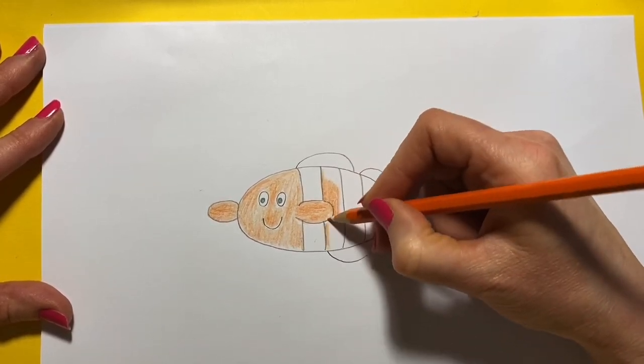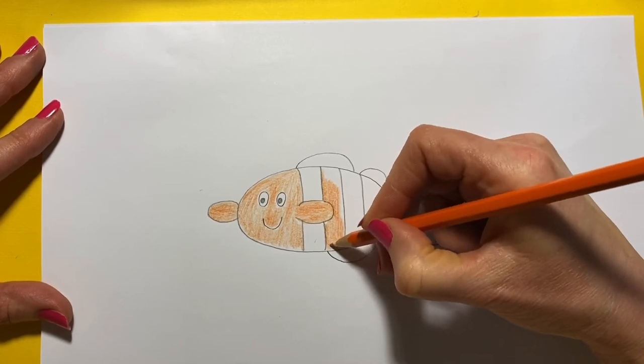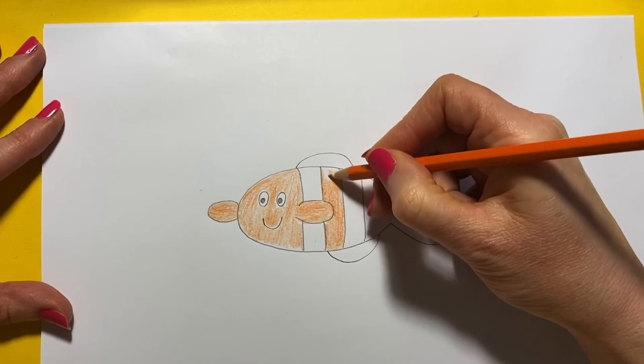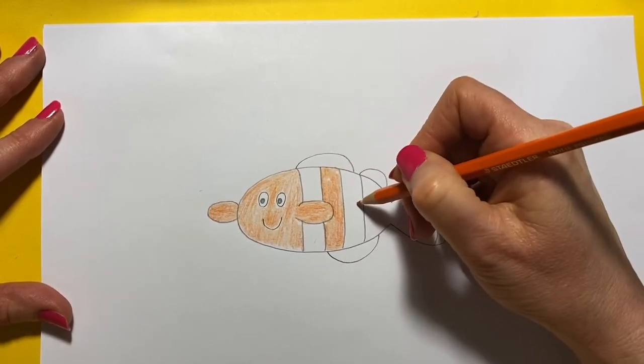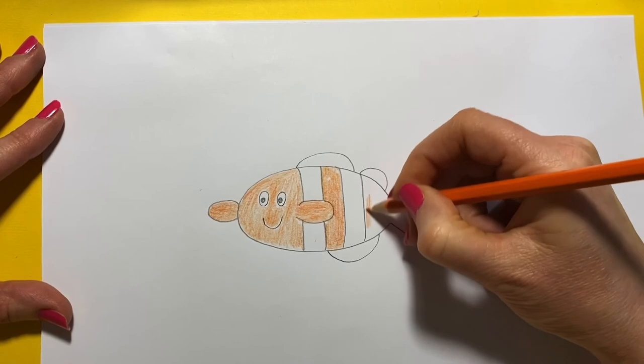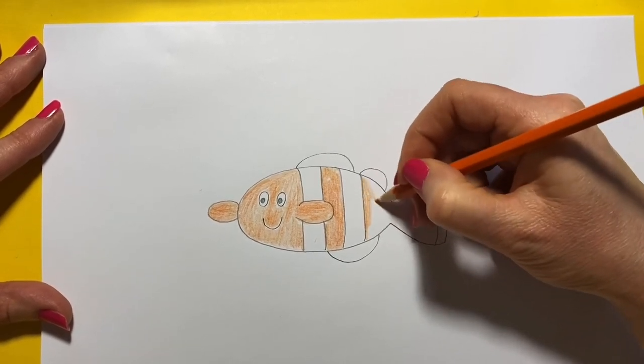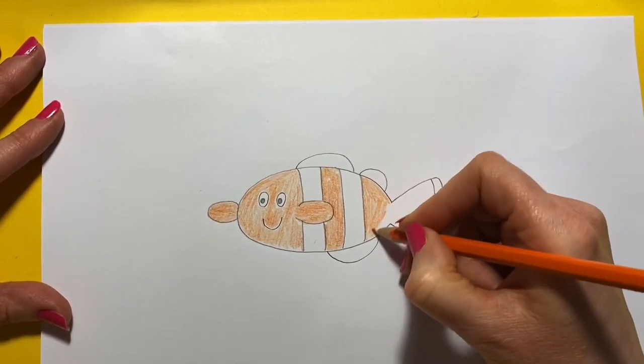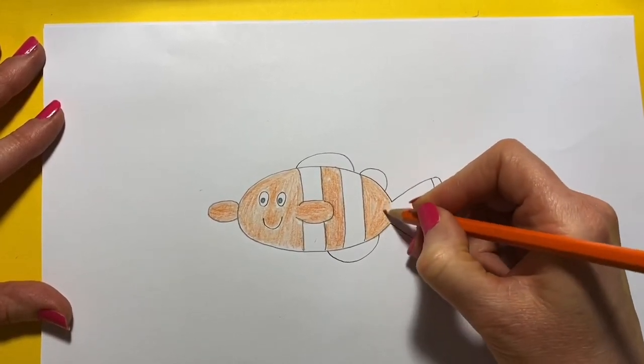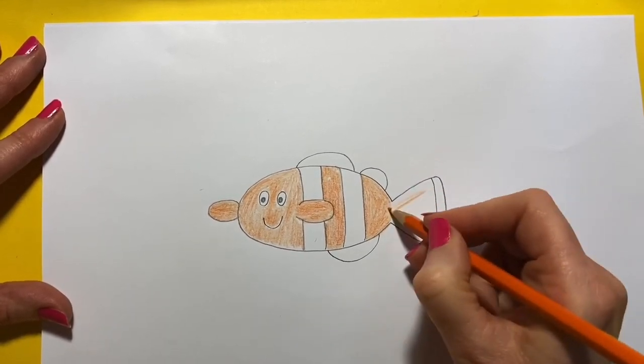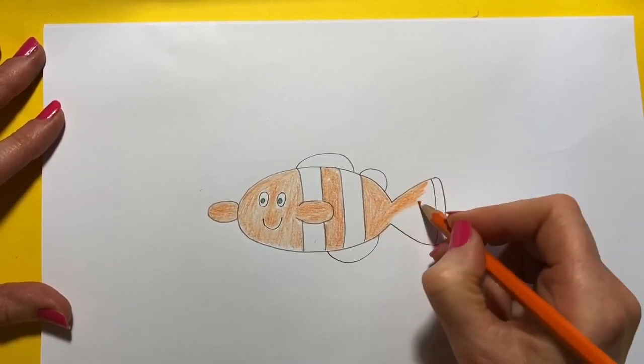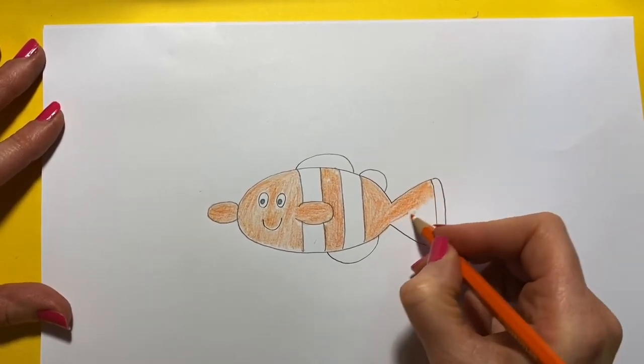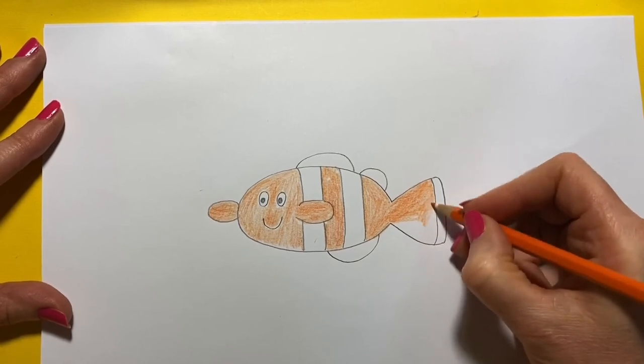And color in this one orange, like that. Then we leave another white stripe, and then we color the tail in orange. I think the film Finding Nemo is brilliant. I've not seen it for ages. That might be something nice to watch over the holidays.